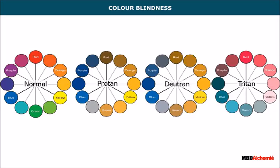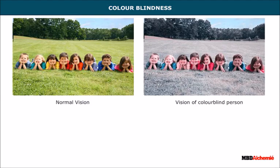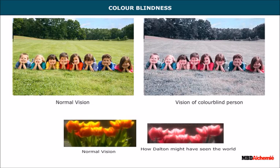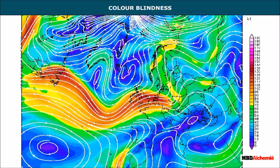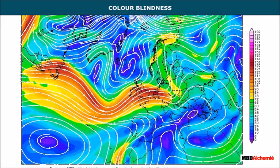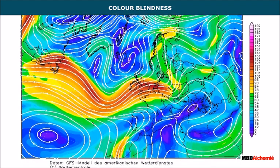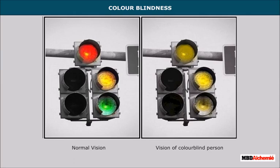Color blindness is a defect caused by the lack of certain types of cone cells that respond to particular colors. A color-blind person cannot differentiate between certain colors. Color blindness is sometimes called Daltonism, as John Dalton, the founder of atomic theory, was color blind. Problems associated with color blindness include reading weather forecast maps on TV which use color codes and traffic lights. Color-blind people identify traffic light positions — red on top, yellow in the center, and green at the bottom — since they cannot rely on color alone.